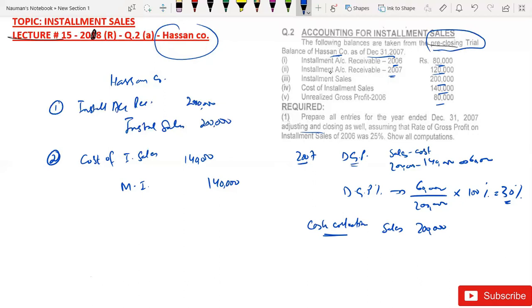If I look at this question, I have a closing balance of 2007 which is 120,000. That means 2,000,000 minus 120,000. If I want to calculate cash collection for 2007, the sale was 2,000,000. So simple, the entry will be bank debit 80,000 and installment account receivable credit 80,000.